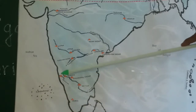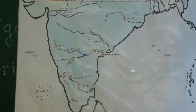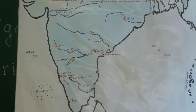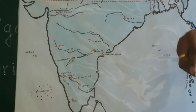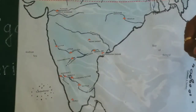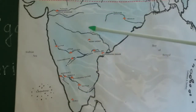Coming down south, you have the Kaveri. Kaveri takes birth at Talakaveri in Kodagu — a place the British called Coorg. From there, along with a number of tributaries joining it, it flows in the eastern direction. Some of the rivers that join Kaveri are Hemavati, Shimsha, Kapila, Arkavati, Lakshmantirtha, Suvarnavati, and Bhavani. These are all tributaries of river Kaveri. The important rivers of Peninsular India are Mahanadi, Godavari, Krishna, and Kaveri.